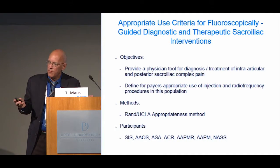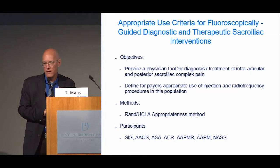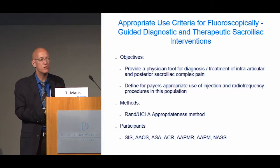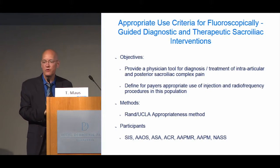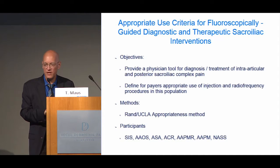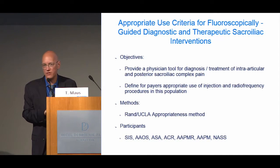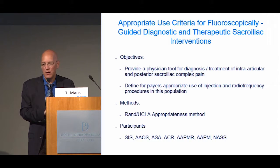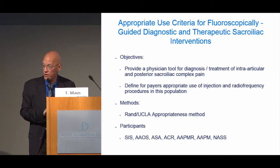We'll now spend the last portion of time talking about intervening in this complex and unique joint, under the guise of the appropriate use criteria for fluoroscopically guided diagnostic and therapeutic sacroiliac joint interventions. This was an effort of the Spine Intervention Society, hosting a large number of sister societies including the American Academy of Orthopedic Surgery, the American Society of Anesthesiologists, the American College of Radiology, the American Academy of Physical Medicine and Rehabilitation, the American Academy of Pain Medicine, and the North American Spine Society. This was our initial effort to create these AUC — appropriate use criteria.